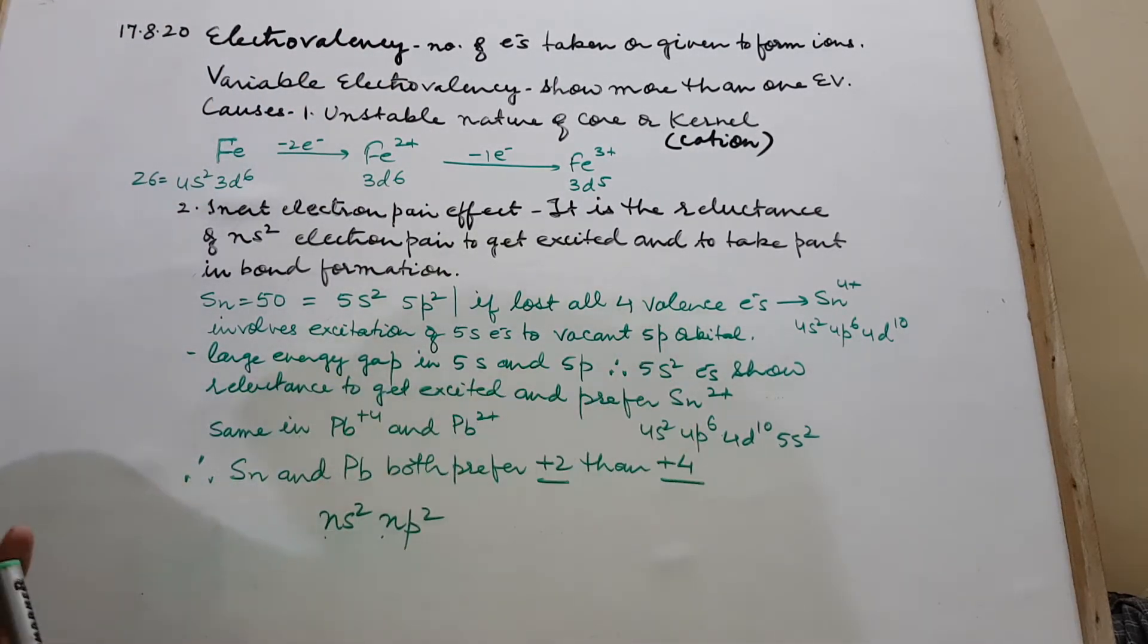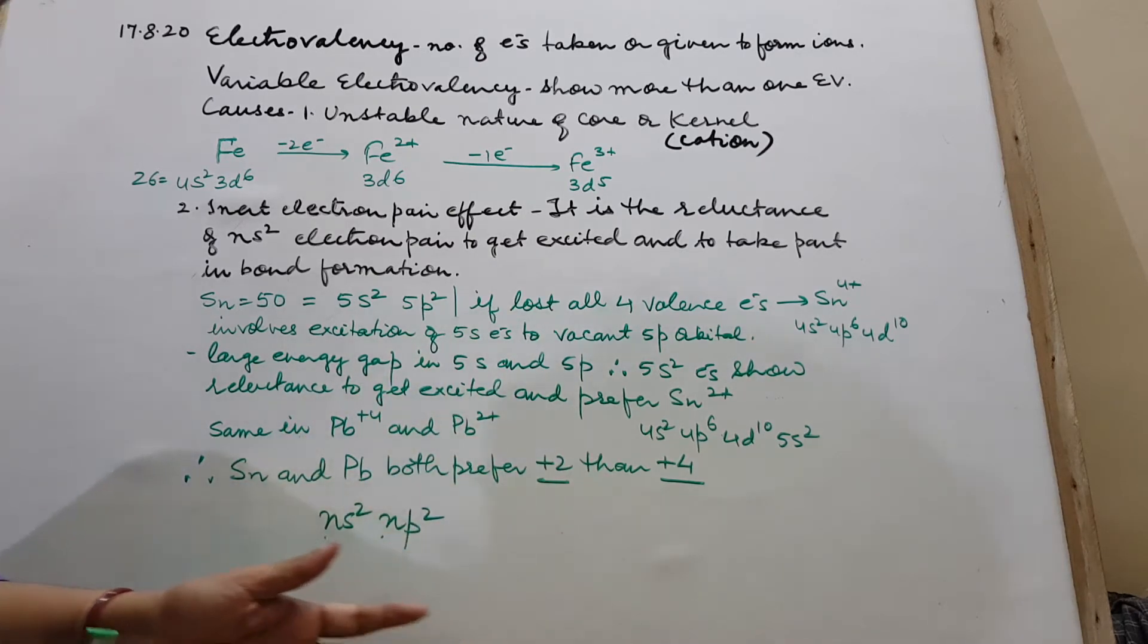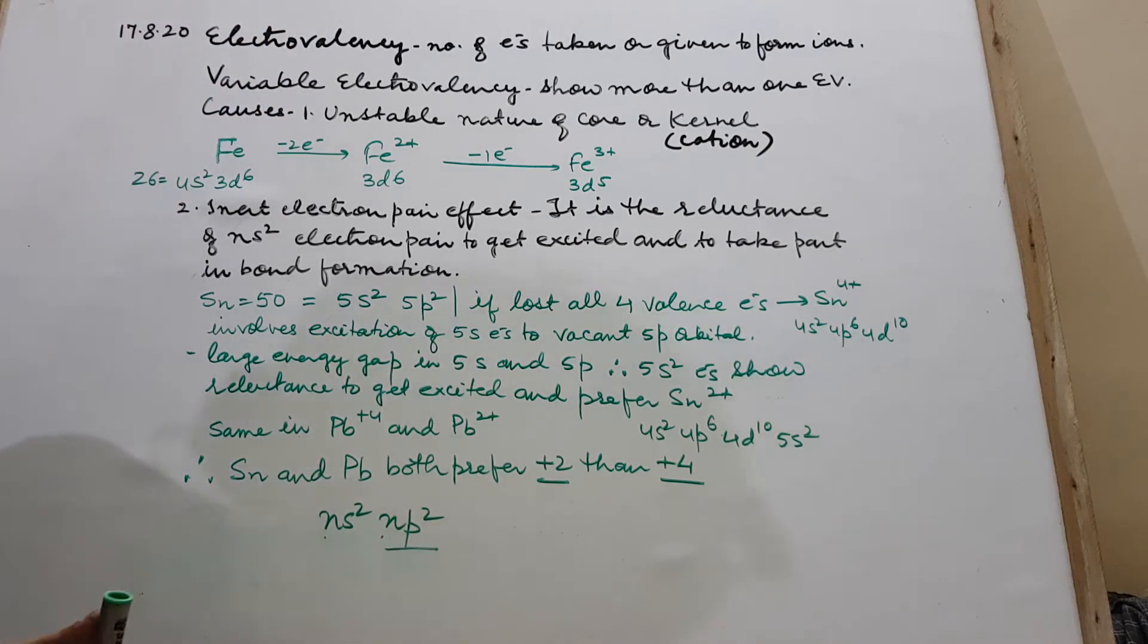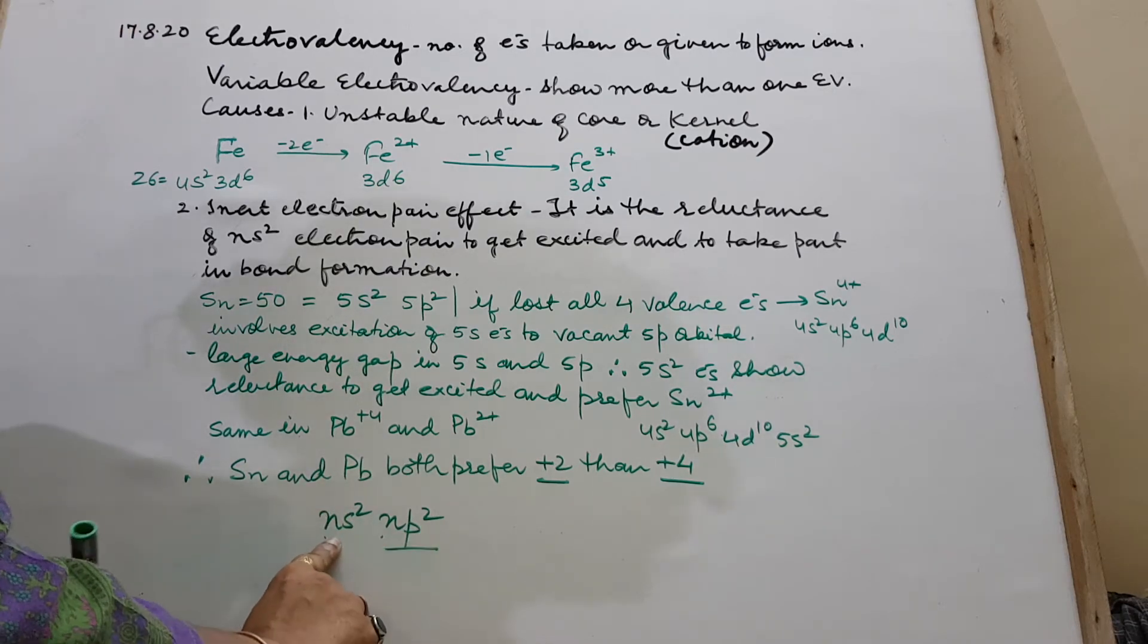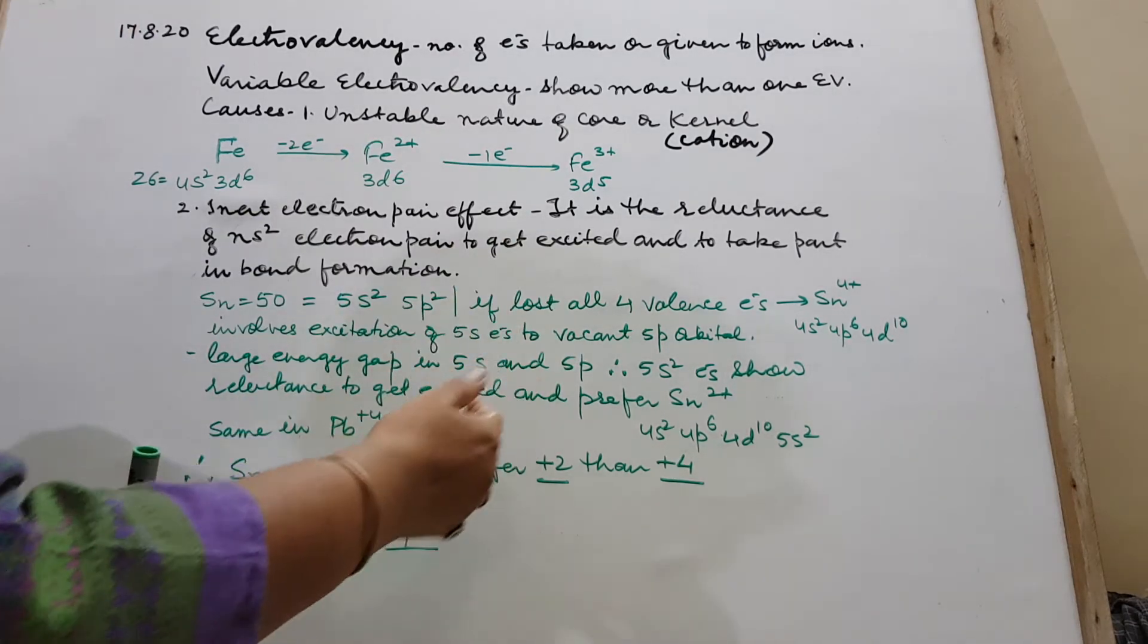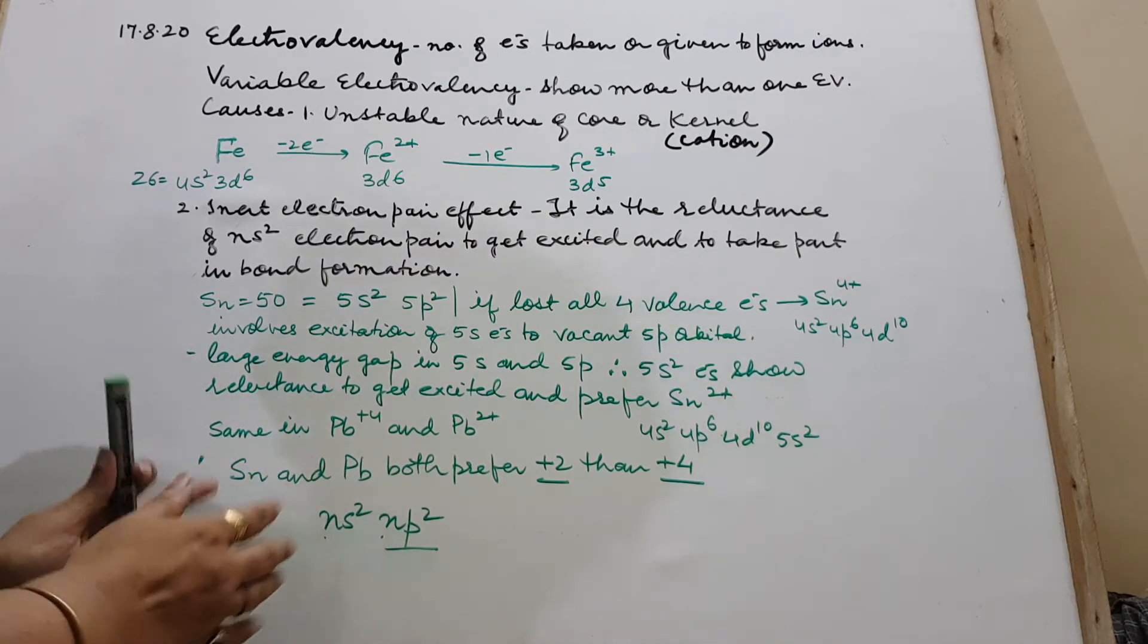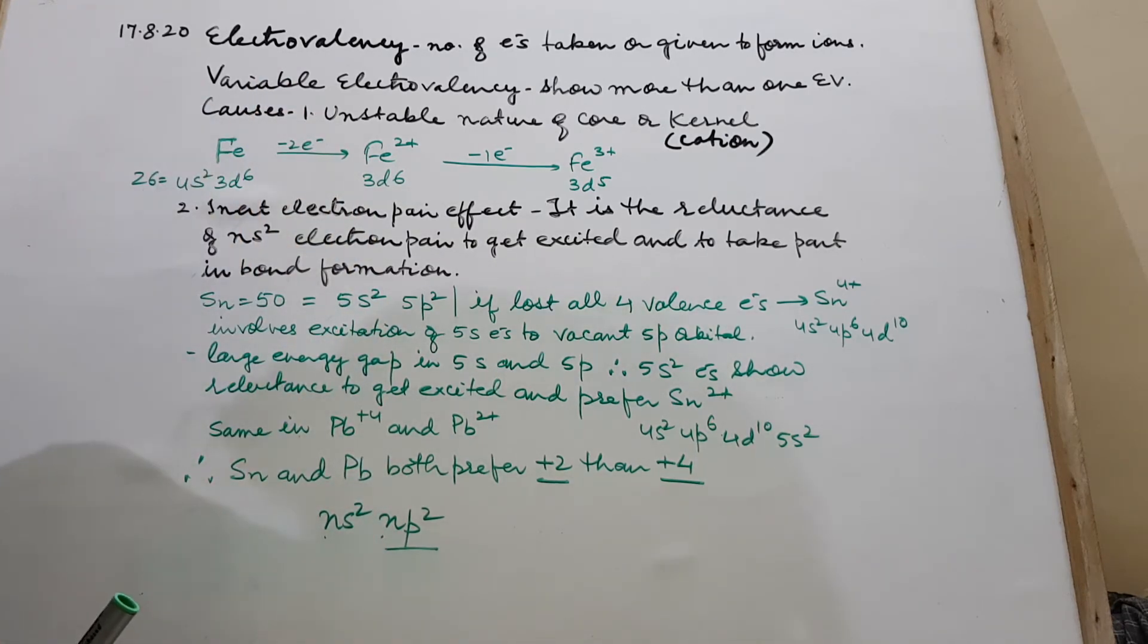So what happens? When all 4 take part in bond formation, they show plus 4 electrovalency or plus 4 charge. But when only p2 take part in bond formation because of the large energy gap between these two, these don't get excited. They don't go to further higher p.